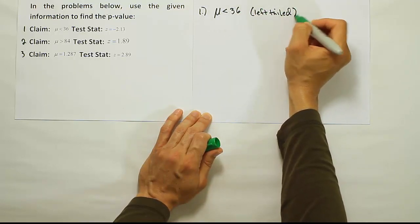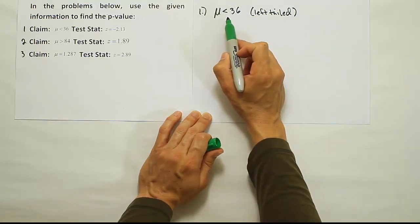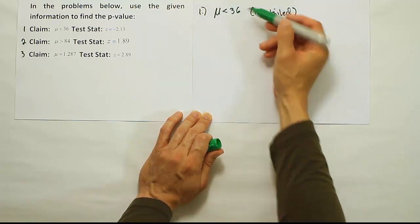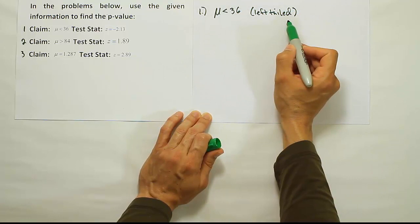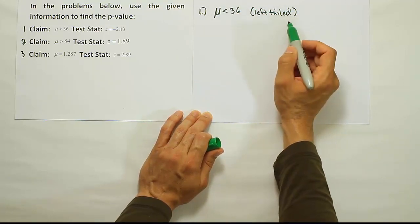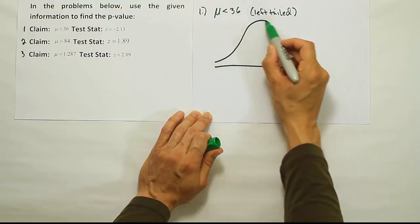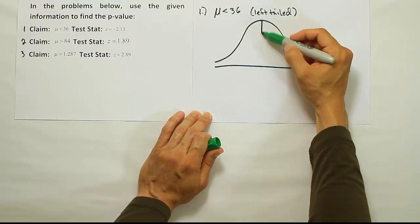The reason I know that is because this symbol is one we would use in HA, and if that's a symbol for HA, that means this is the alternative hypothesis. When it's less than, it means left-tailed. So I know for sure it's a left-tailed test. The next thing I need to do is draw the bell curve.